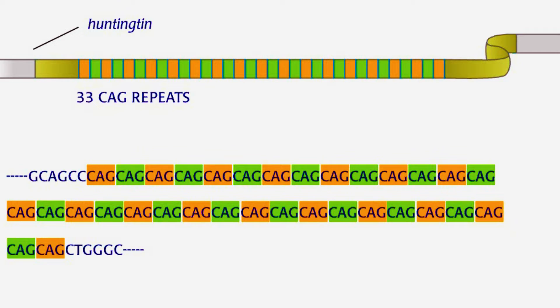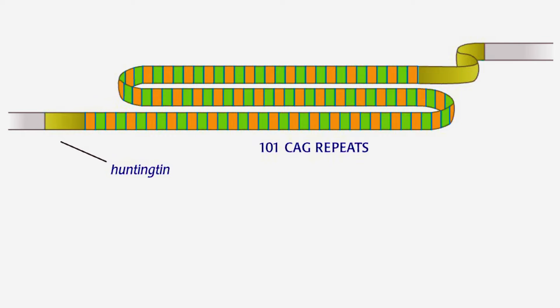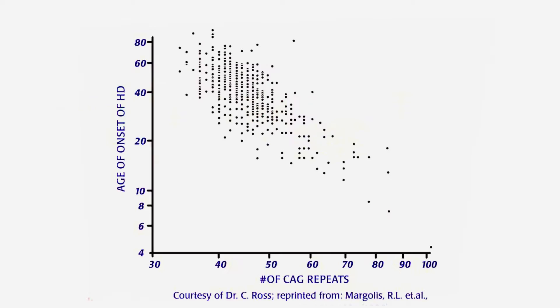The gene is bigger in a region where three letters of code, CAG, are repeated many times. The number of CAG repeats varies from person to person. People without Huntington have between 9 and 35 repeats, while people with Huntington have between 36 and 121.